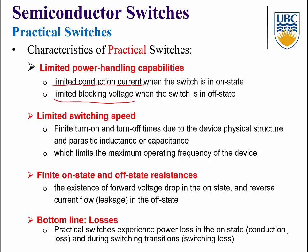For practical switches, when turned on, the switch carries current through a finite on-state resistance, causing conduction losses. In the off state, the switch has finite off-state resistance — maybe megaohms — resulting in a small leakage current. During switching transitions, because current and voltage rise and fall times are finite, we also have switching losses.